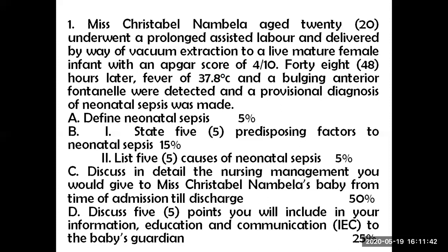Apart from bulging fontanel, there will be raised body temperature. In the scenario, the temperature is 37.8 degrees Celsius — for a newborn, this is too high. There is also cyanosis, which is due to reduction in oxygen-carrying capacity. When there is infection, the remaining red blood cells have reduced oxygen-carrying capacity. Sepsis spreads through systemic circulation, and apart from other body parts, the meninges may also be affected.